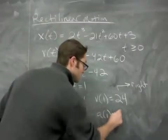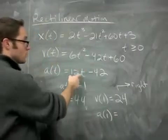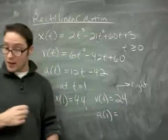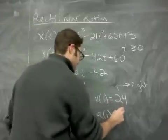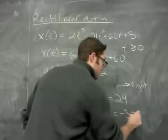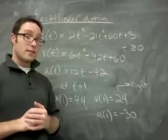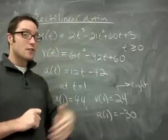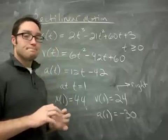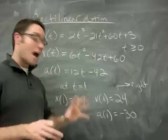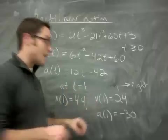And then acceleration at t equals 1 would be 12 - 42. Oh, that's a negative number. Negative 30. Which doesn't mean you're slowing down necessarily. A negative acceleration doesn't really mean anything. What you have to do is you have to look at both velocity and acceleration together.